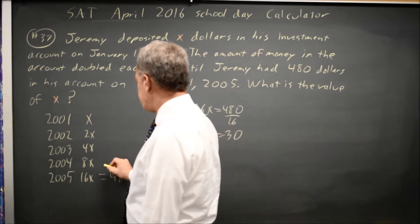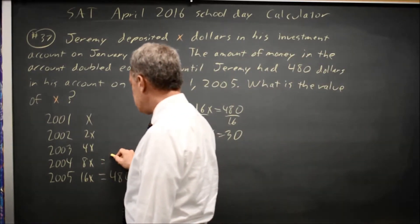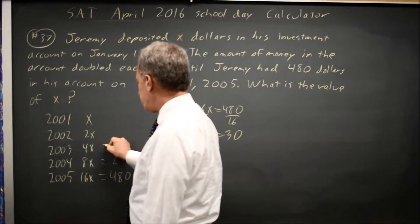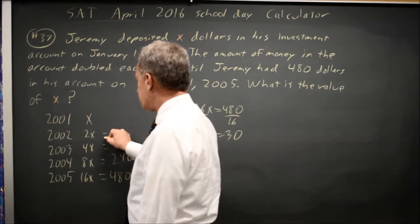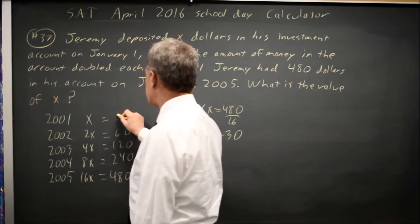Alternatively, if it doubled every year and it's 480, it was 240, and a year before that it was 120, and a year before that it was 60, and a year before that it was 30.